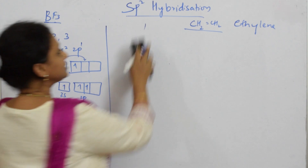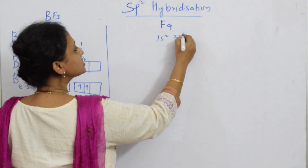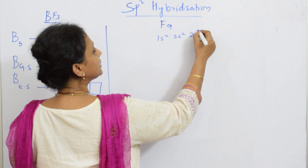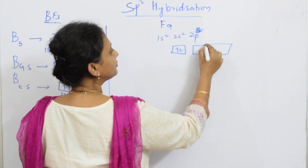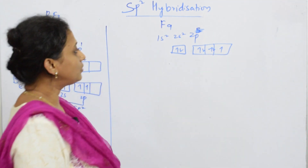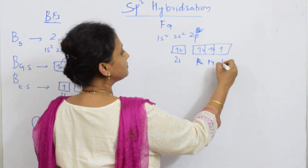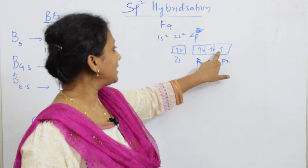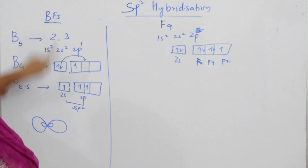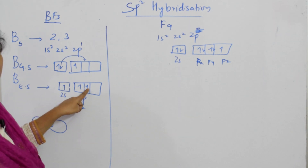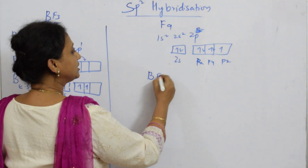For fluorine, the atomic number is 9, so its configuration is 1s², 2s², 2p⁵. In the ground state, filling the orbitals gives one half-filled orbital. Each fluorine has one vacant orbital available for bonding. For three fluorines, there are three half-filled orbitals. These three fluorine orbitals will come and join the three orbitals on boron. The structure forms in one plane since 1S and 2P intermingle in a single plane.